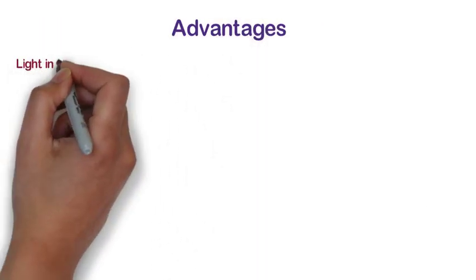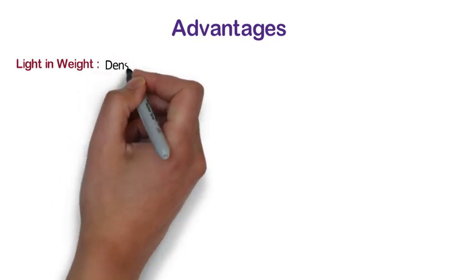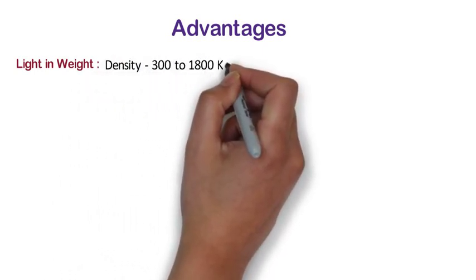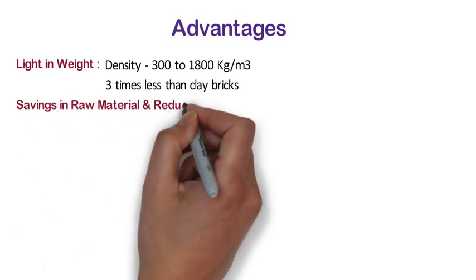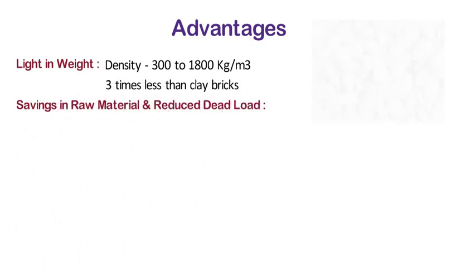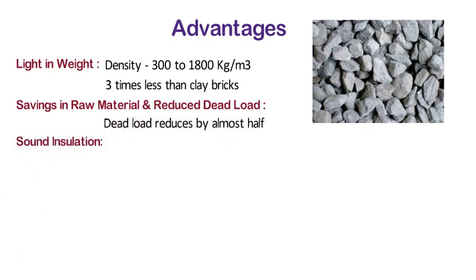Now let us see what are the advantages of cellular lightweight concrete blocks. Light in weight: CLC blocks are very lightweight with density ranging from 300 to 1800 kg per m3. The weight of CLC blocks is 3 times less than clay bricks. Savings in raw material and reduced dead load: aggregates are not required in manufacturing of CLC, hence the dead load reduces by almost half.